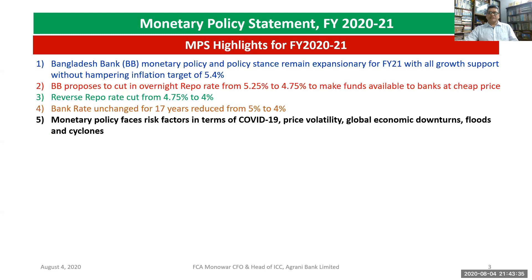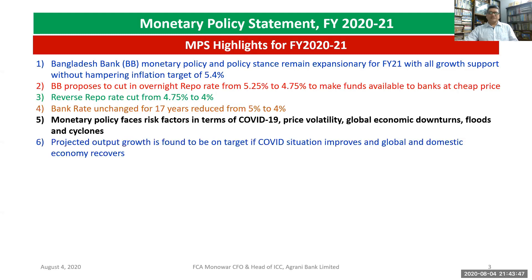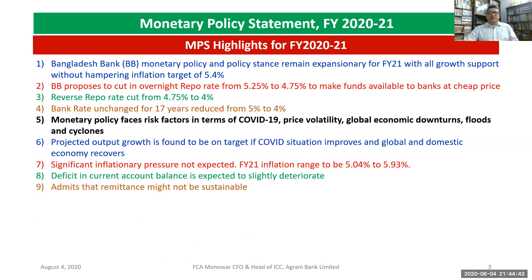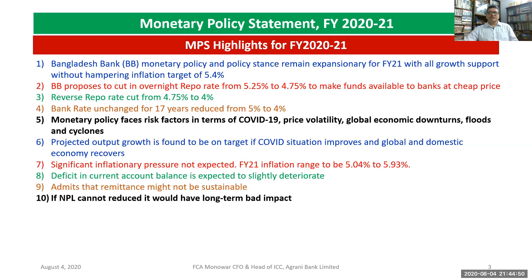The monetary policy identifies risk factors including COVID-19, price volatility, global economic losses, and cyclones. Projected output growth is expected to be on target if the average situation improves and global and domestic economic conditions recover in fiscal year 2021. The inflation range is projected to be between 5.04% and 5.93%. The current account balance is expected to slightly downgrade, and remittances might not be sustainable. If NPLs cannot be reduced, it would have a long-term negative impact.